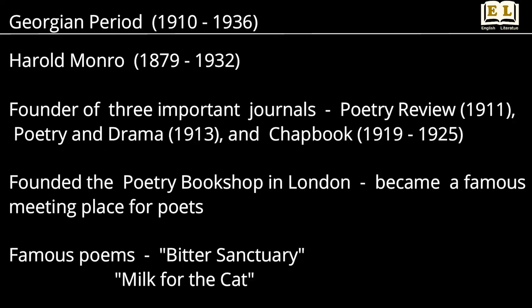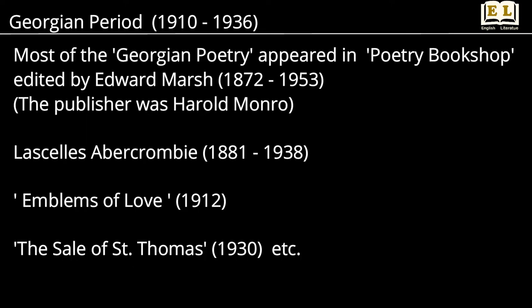Harold Monro is known as the founder of three important journals: Poetry Review, Poetry and Drama, and Chapbook. He founded the Poetry Bookshop in London, which became a famous meeting place for poets. His famous poems are Bitter Sanctuary and Milk for the Cat. Most of the Georgian poetry appeared in the Poetry Bookshop, edited by Edward Marsh. Lascelles Abercrombie's works include Emblems of Love, The Sale of St. Thomas, etc.